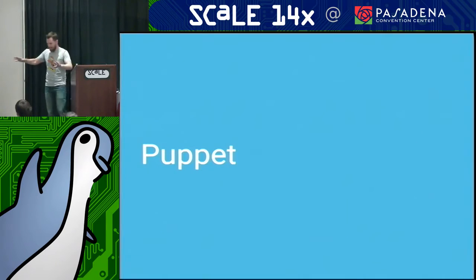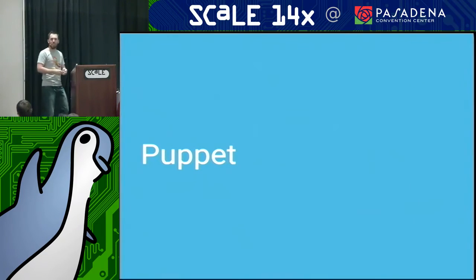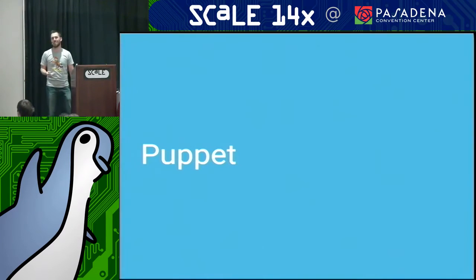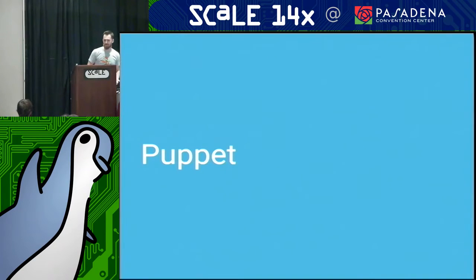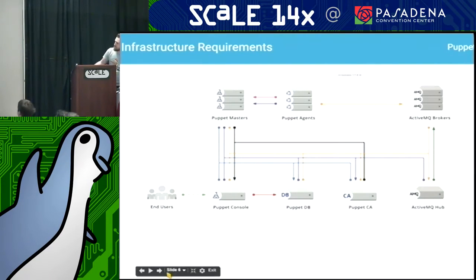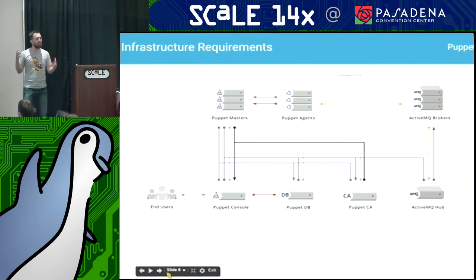So you decide you're going to pick a tool. Puppet spends a lot of marketing dollars, so they must be good — mature, and on my Twitter stream every fifth week. Let's go with it. First you look at the documentation for a simple architecture diagram, and it's a little more than expected — large scale, like seven thousand nodes. I know people in this room that have that.